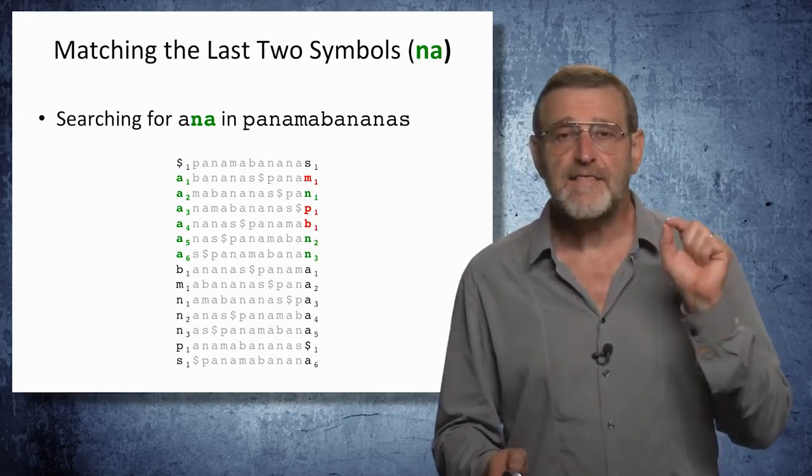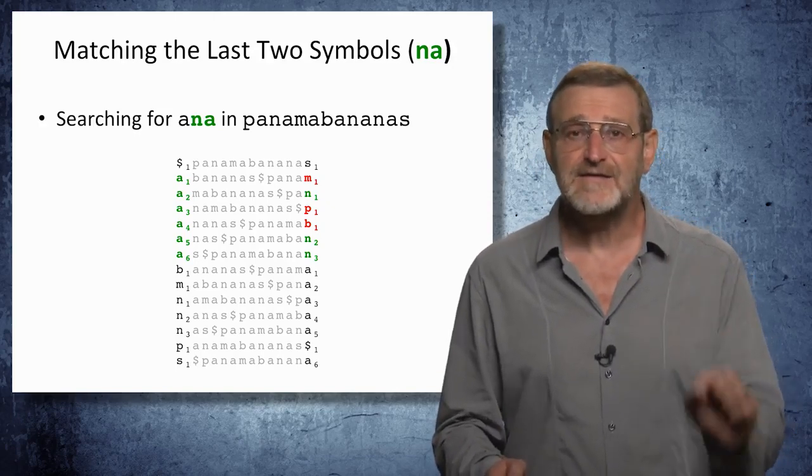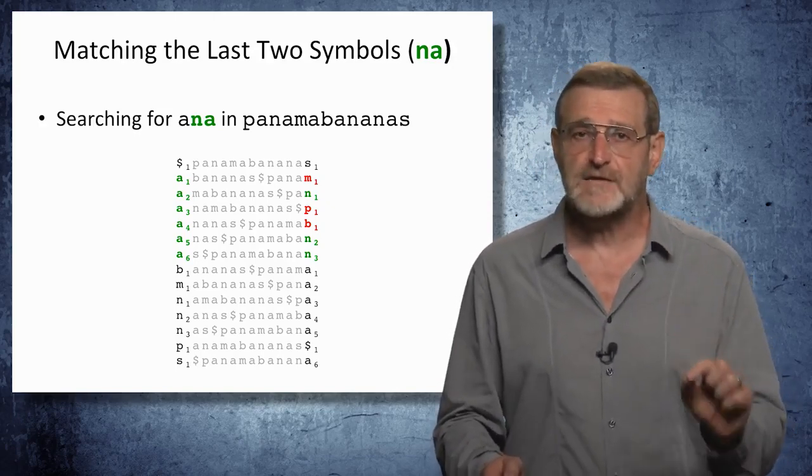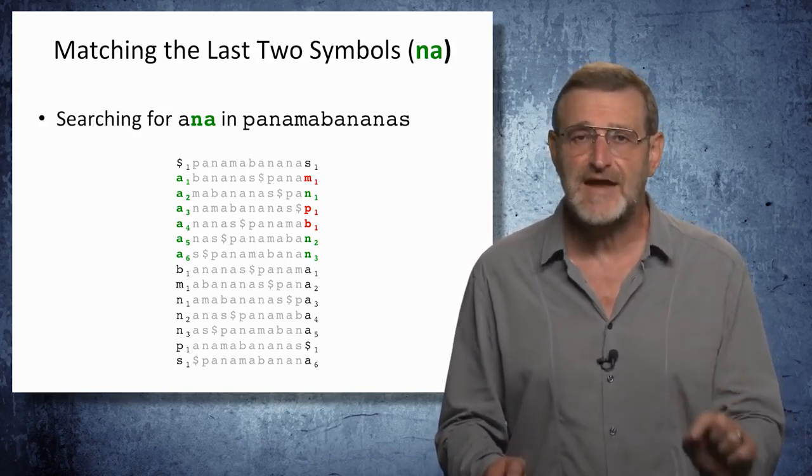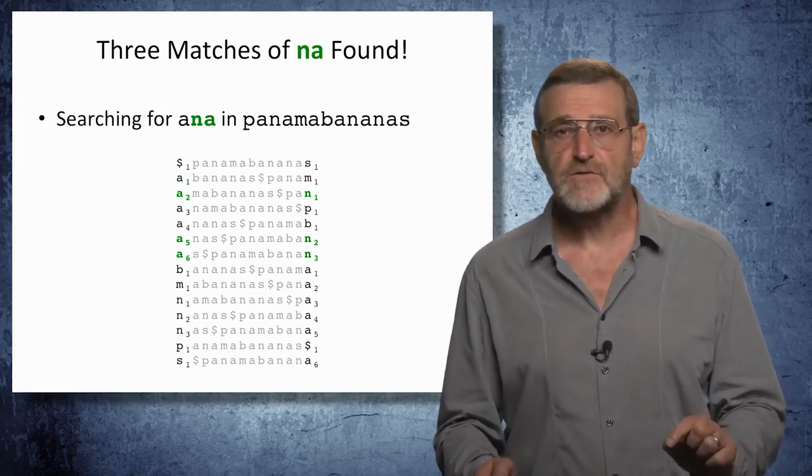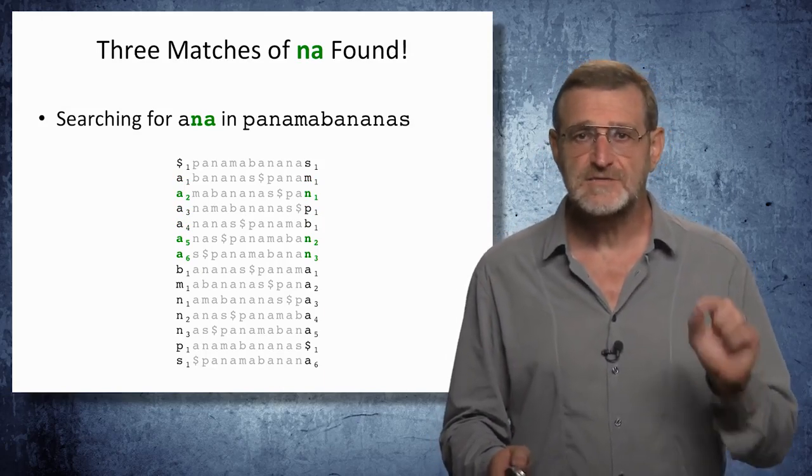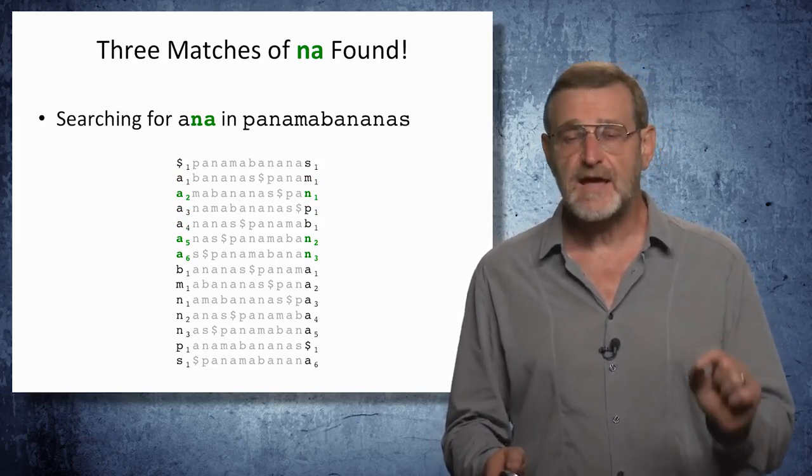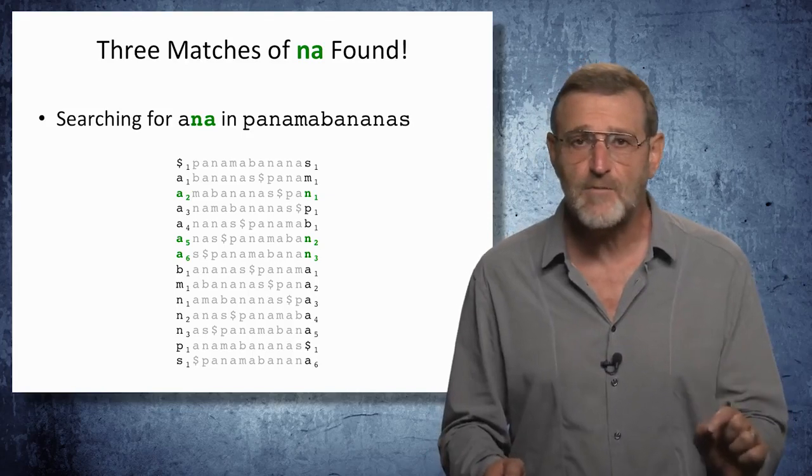But only three of them are ending in N, what we need, because we are looking for matching the last two symbols of 'ana', which is N-A. So we narrow attention to these three symbols, and using the first-last property...